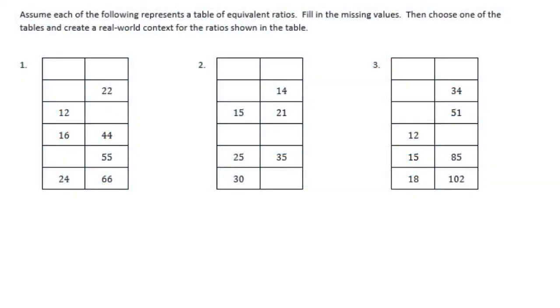Sixth grade, module 1, lesson 9, problem set. Assume each of the following represents a table of equivalent ratios. Fill in missing values, then choose one of the tables and create a real-world context for the ratios shown in the table.